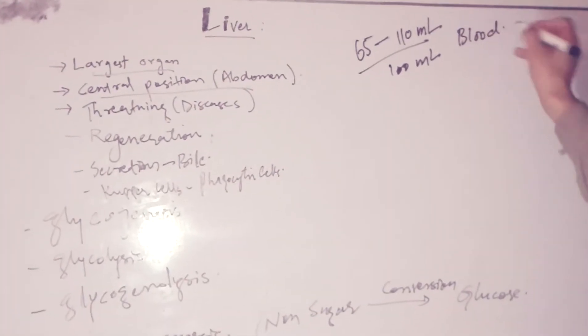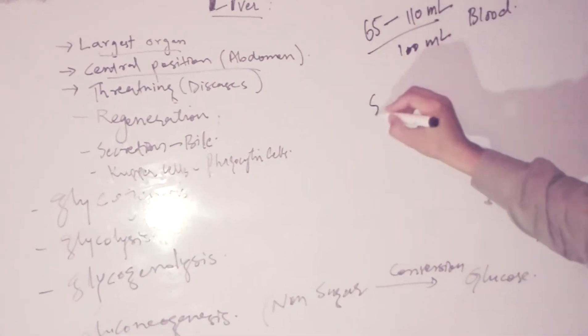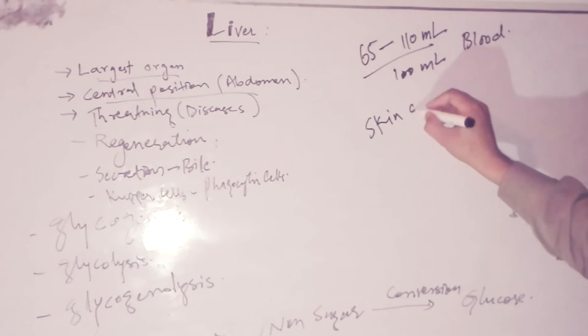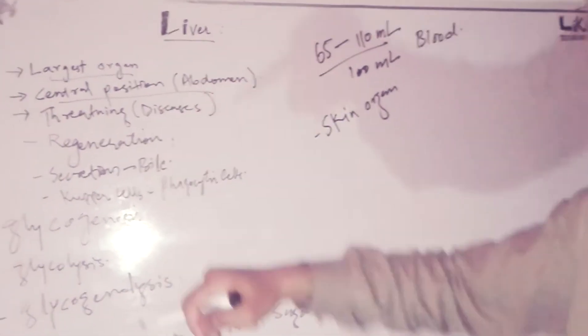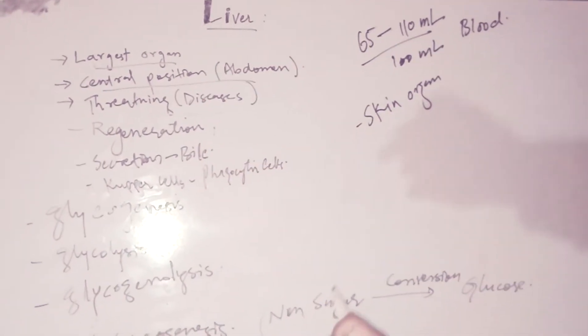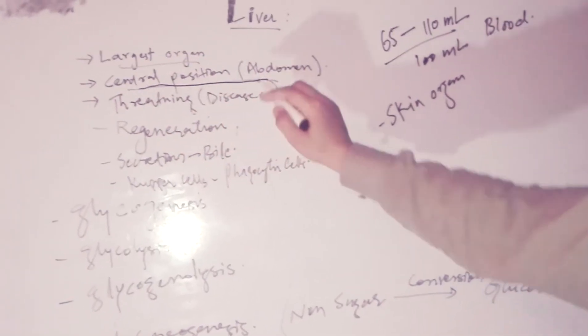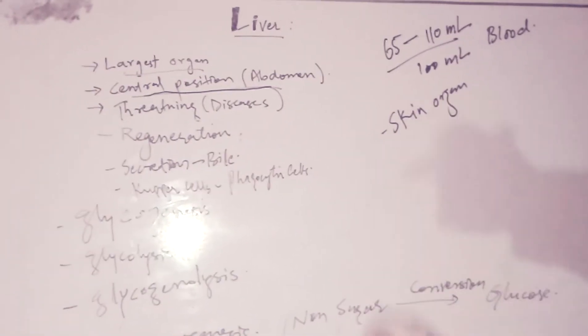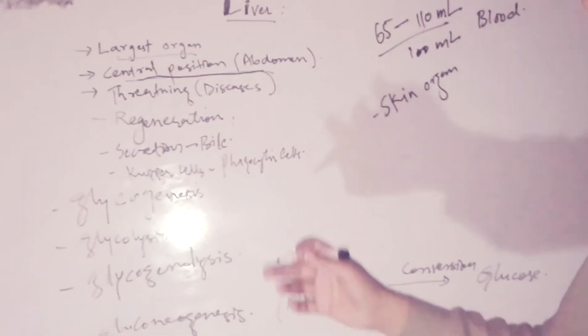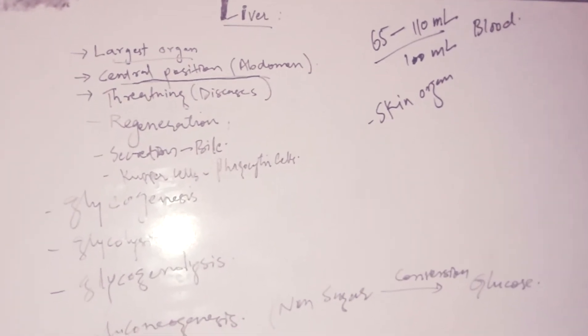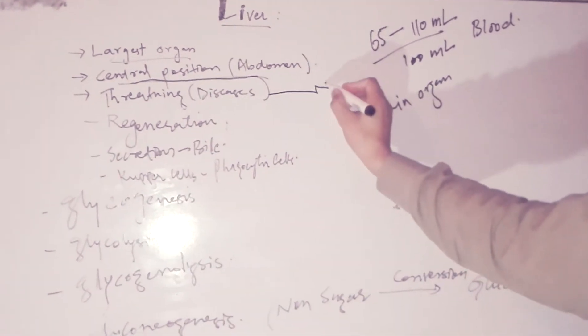Some people consider skin the largest, but we can say that liver is the largest inside the body. Liver has a central position in the abdominal cavity beneath the ribs. The location of the liver is beneath the ribs.